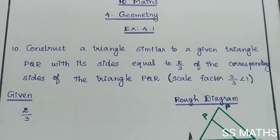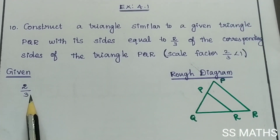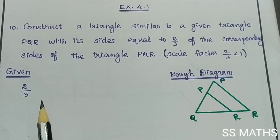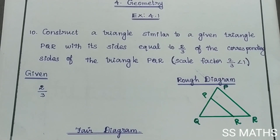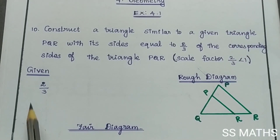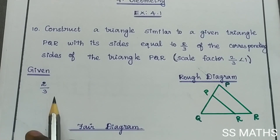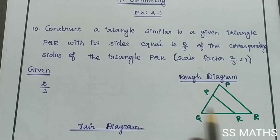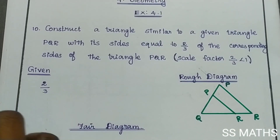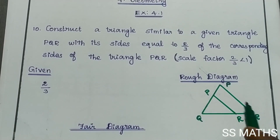First, the practical statement: first, write the given and draw a rough diagram, then the fair diagram. The given question has scale factor 2 by 3, which is less than 1. Next, draw the rough diagram — the first triangle that runs is the triangle PQR, so we draw the triangle.